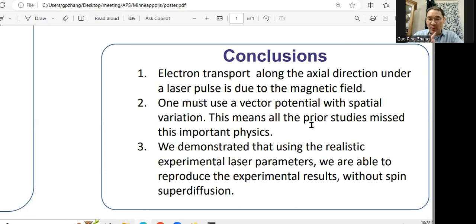So that's quite an important requirement. Because of this, that's why all the prior theories which use the vector potential, which is spatially independent, it's not possible to describe the electron transport.